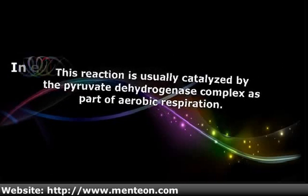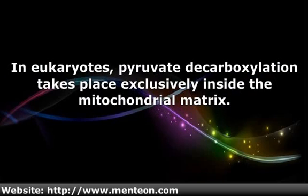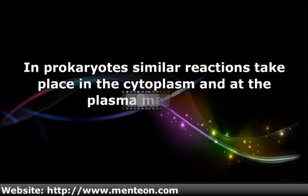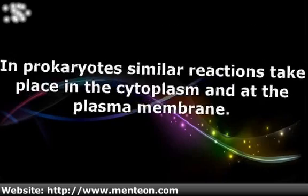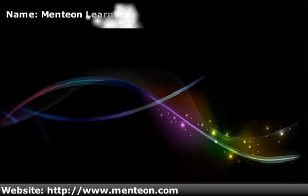In eukaryotes, pyruvate decarboxylation takes place exclusively inside the mitochondrial matrix. In prokaryotes, similar reactions take place in the cytoplasm and at the plasma membrane, coupled to the citric acid cycle.